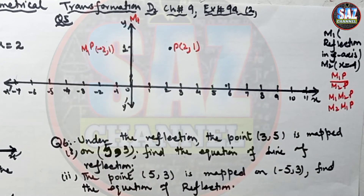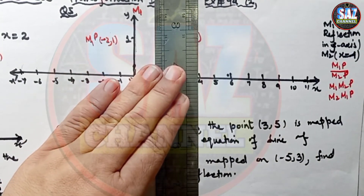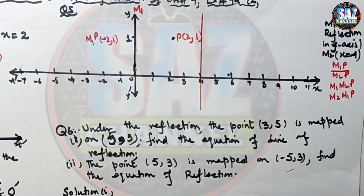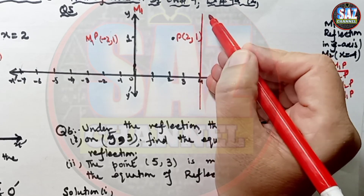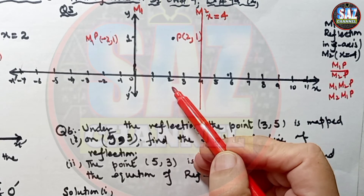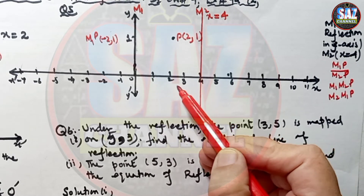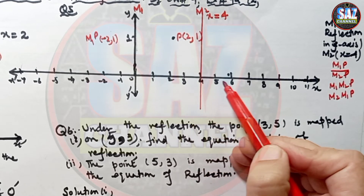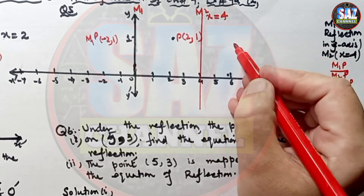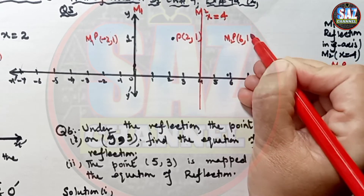For M2, the mirror is x equals 4 — a vertical line parallel to the y-axis, cutting the x-axis at 4. This is mirror M2. Object P(2, 1) is two units away from the mirror line x equals 4, so the image M2P is two units on the other side of the mirror, giving M2P equals (6, 1).